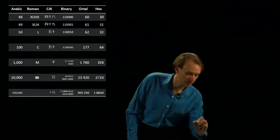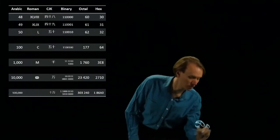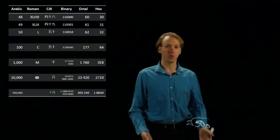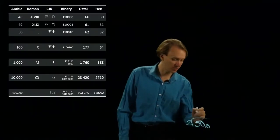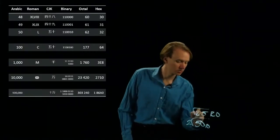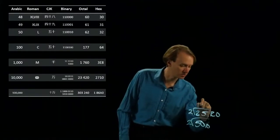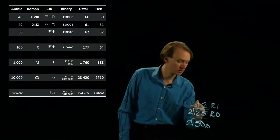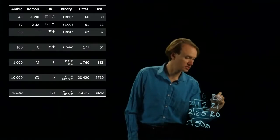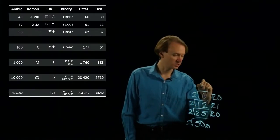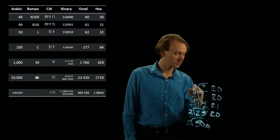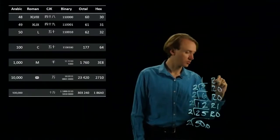To convert a larger number like 50 from decimal to binary, we're going to do the same thing — just a whole lot of division. So 50 divided by 2 is 25 remainder 0. 25 divided by 2 is 12 remainder 1. 12 divided by 2 is 6 remainder 0. 6 divided by 2 is 3 remainder 0. 3 divided by 2 is 1 remainder 1.